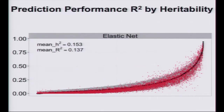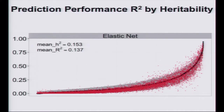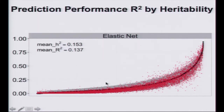Heritability represents the upper limit on how well you could do with such a method, since we're using only genome variation to impute transcript levels. Fortunately, there are plenty of transcripts with very high heritability. What you see here is the prediction performance R-squared — an out-of-sample comparison of predicted to directly measured transcript level, shown against GCTA-based linear mixed model heritability. The black line is the estimated heritability; the red dots are the R-squared prediction performance. The more highly heritable the trait, the better the prediction performance.